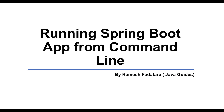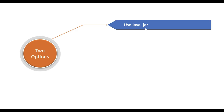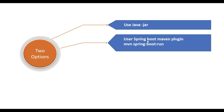However, we may want to run our Spring Boot application from outside the IDE, and one option is to use the command line. There are two options: the first option is we can use the java -jar command, and the second option is we can use the Spring Boot Maven plugin, that is the mvn spring-boot:run command.